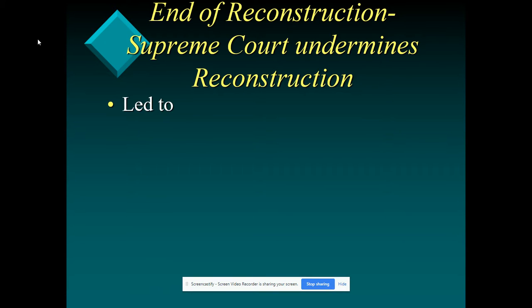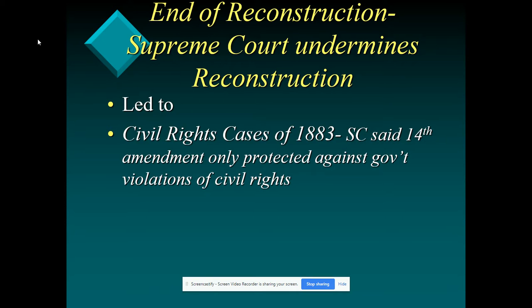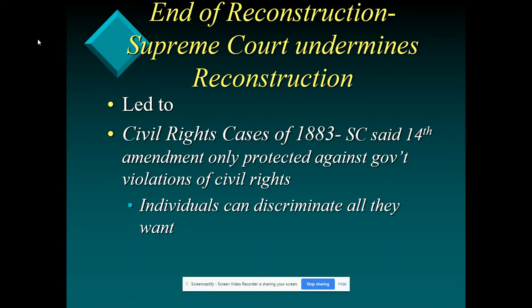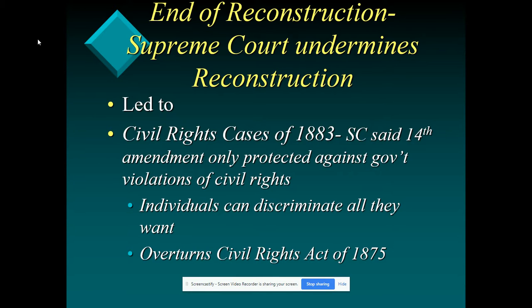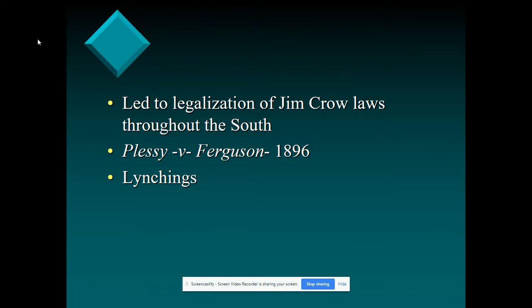This signals the end of Reconstruction. The Supreme Court undermines Reconstruction because of cases like Plessy v. Ferguson. The Civil Rights Cases of 1883 said that the 14th Amendment only protected against government violation of civil rights and that people were free to discriminate however they wanted to. This is reinforced by Plessy v. Ferguson, which establishes segregation and Jim Crow laws in the South. The Civil Rights Act of 1883 overturns the Civil Rights Act of 1875 that gave African Americans freedoms and protected them when they went to vote and participate in government.